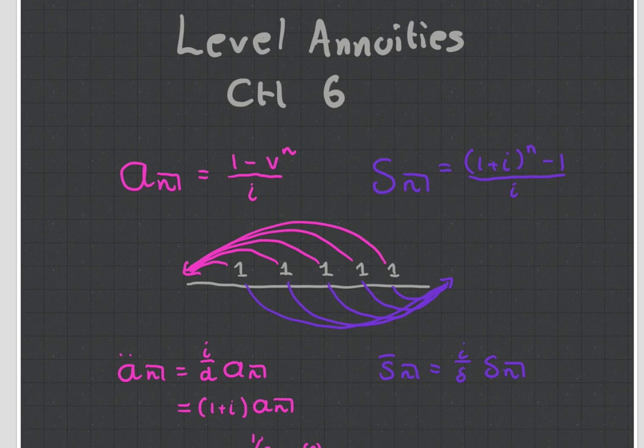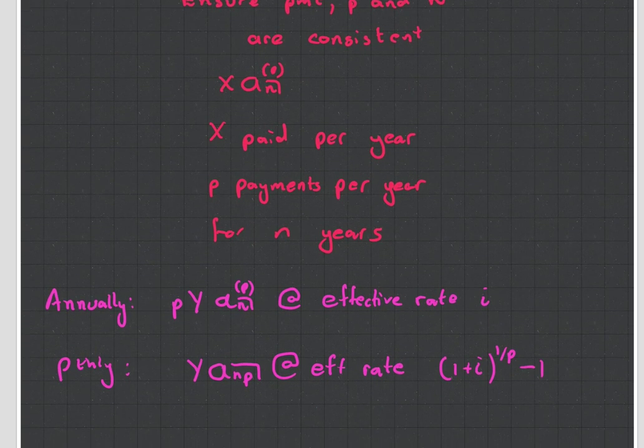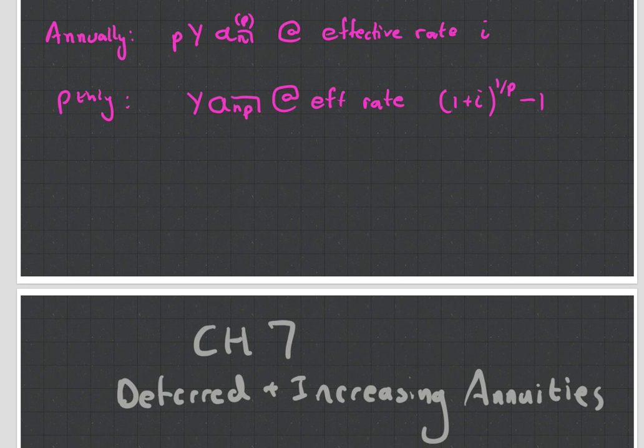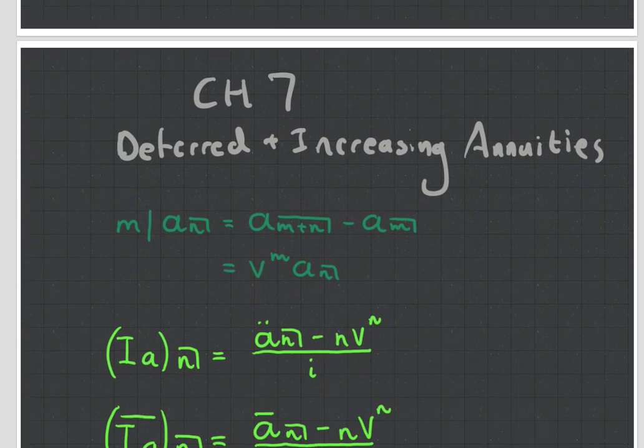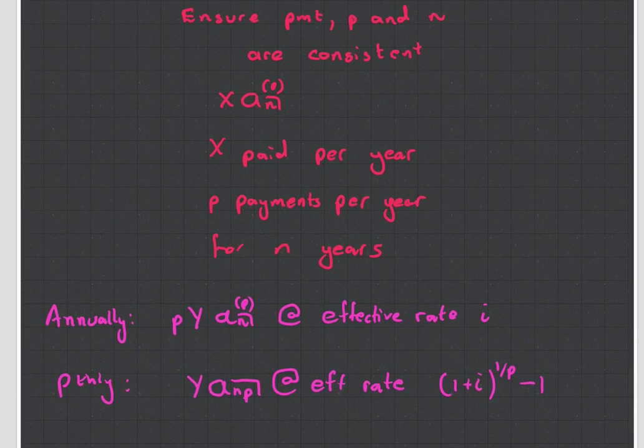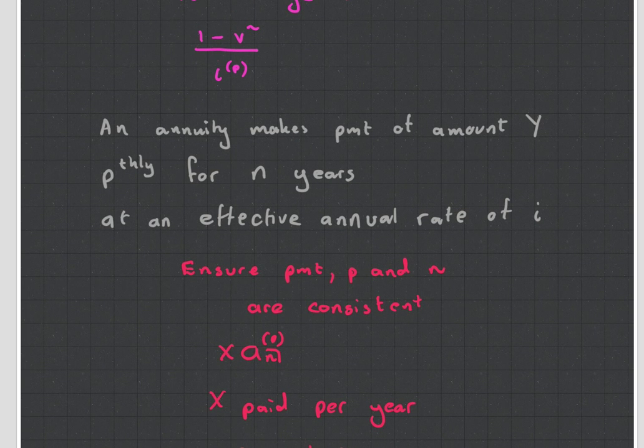But yeah, that is chapter 6, level annuities. And you'll see they start getting interesting because we can start increasing them in chapter 7. But I'll talk about that stuff next time. Thanks for watching, guys. Cheers.